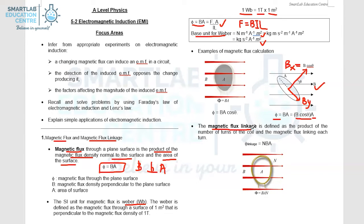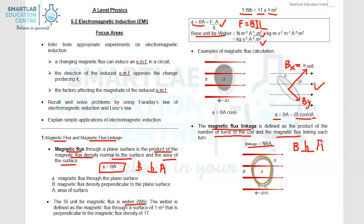Let's now take a look at magnetic flux linkage. Magnetic flux linkage is defined as the product of the number of turns of the coil and the magnetic flux linking each turn. Hence the formula is: flux linkage equals NBA. In the use of this formula, the magnetic flux density B must be perpendicular to the surface area.